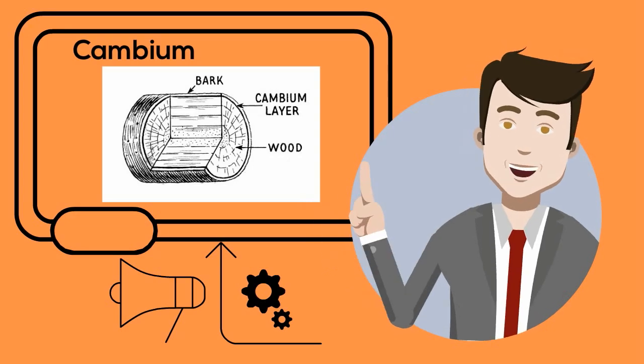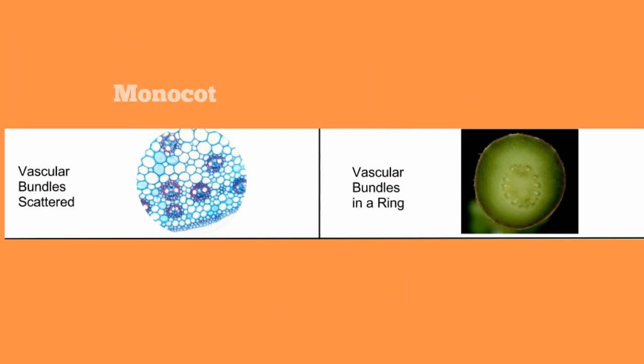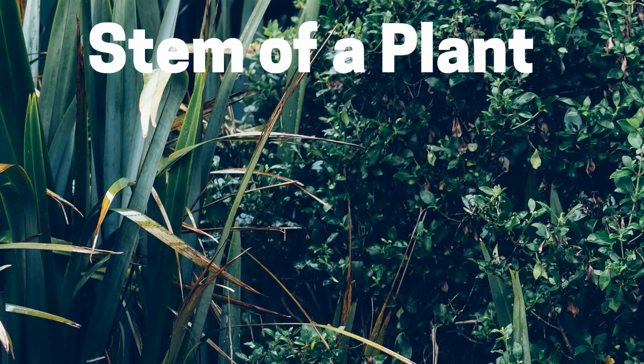If you look at the xylem and phloem of a dicot, you will see that they are arranged in a ring. With a monocot, they are scattered throughout. There we have the stem of a plant. It's important for support, transportation, and storage.